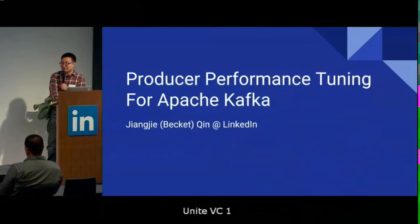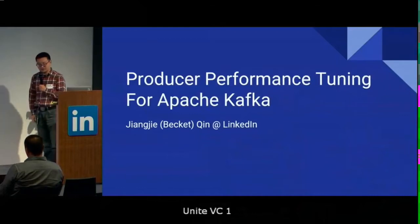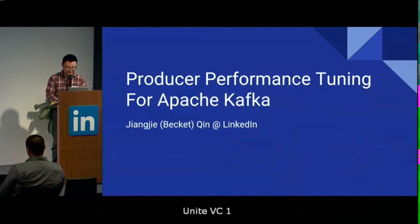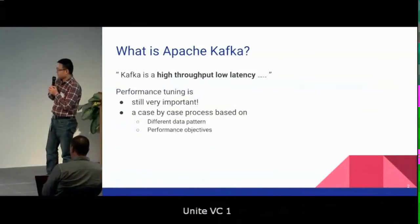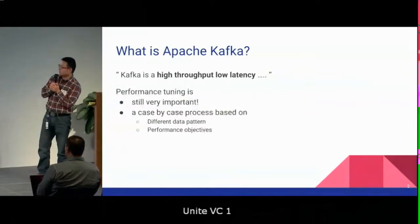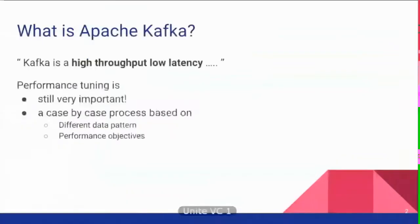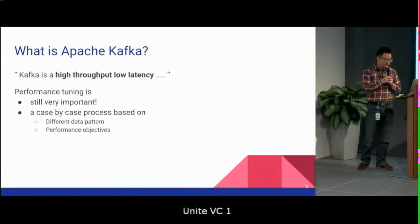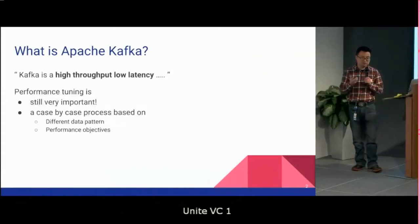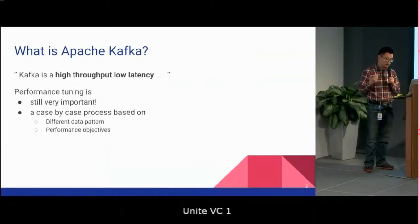I have a pretty tight schedule — my original talk was actually 50 minutes — so I'll try to finish within the time. If someone asks you what is Apache Kafka, the standard answer would be something like 'Kafka is a high-throughput, low-latency' — and so on. However, high-throughput and low-latency don't come out of the box; you have to tune it to get the best performance.